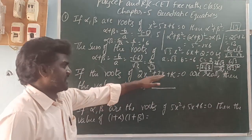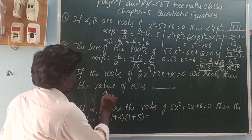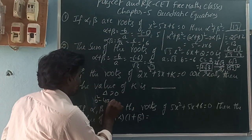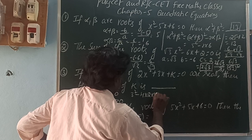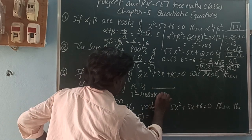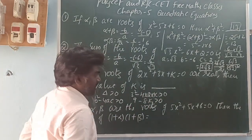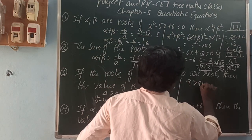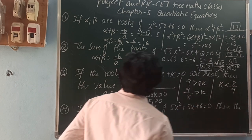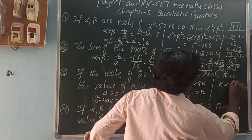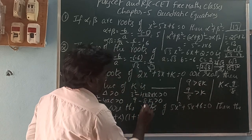Next, if the roots of 2x² + 3x + k = 0 are real, then the value of k is — the roots are real means the discriminant is greater than or equal to 0. So discriminant b² - 4ac ≥ 0. b value is 3, so 3² - 4 × 2 × k ≥ 0. That is 9 - 8k ≥ 0. So 9 ≥ 8k, meaning 9/8 ≥ k, or k ≤ 9/8.